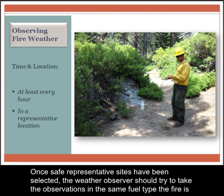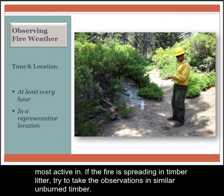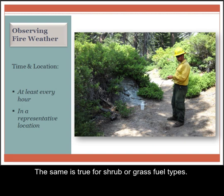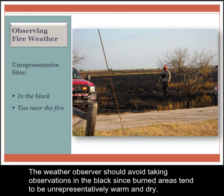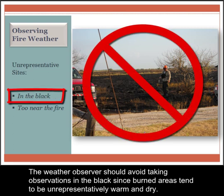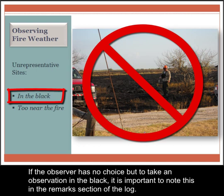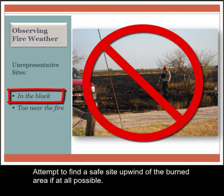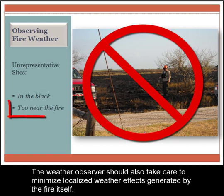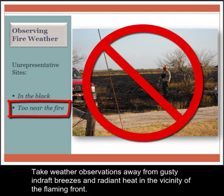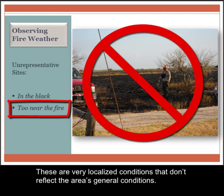Once safe representative sites have been selected, the weather observer should try to take the observations in the same fuel type the fire is most active in. If the fire is spreading in timber litter, try to take the observations in similar unburned timber. The same is true for shrub or grass fuel types. The weather observer should avoid taking observations in the black, since burned areas tend to be unrepresentatively warm and dry. If the observer has no choice but to take an observation in the black, it is important to note this in the remarks section of the log. Attempt to find a safe site upwind of the burned area if at all possible. The weather observer should also take care to minimize localized weather effects generated by the fire itself. Take weather observations away from gusty in-draft breezes and radiant heat in the vicinity of the flaming front.